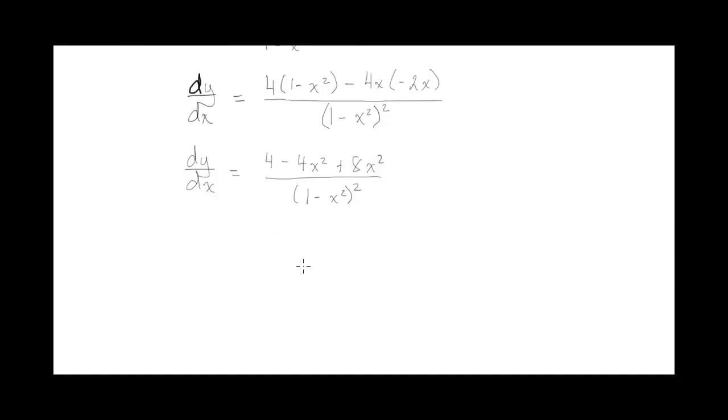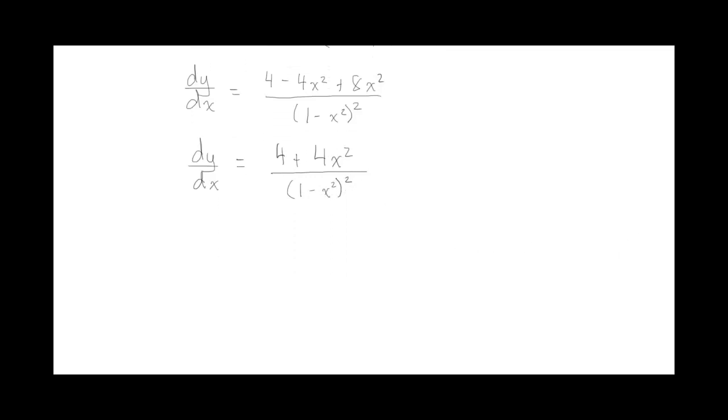So I'll just collect like terms on the numerator. So I get 4 plus 4x squared all over 1 minus x squared squared. So that's the first derivative.